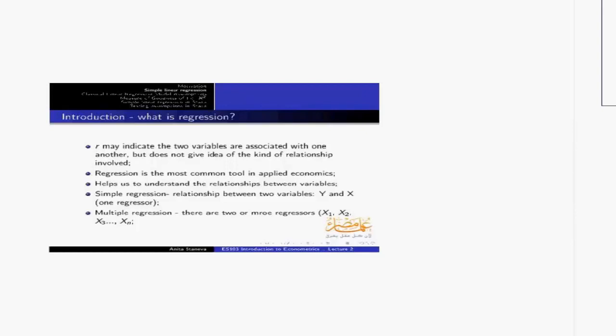Regression analysis helps us understand the relationship between variables, and it is particularly useful when there are more than two variables — such as unemployment, interest rates, money supply, exchange rates, and inflation — where the interaction between variables is more complex. For example, the price of houses depends on many characteristics: number of bedrooms, location, lot size, and so on. All these relationships require regression analysis.